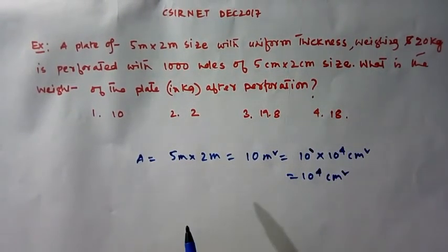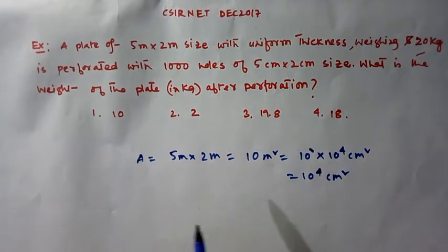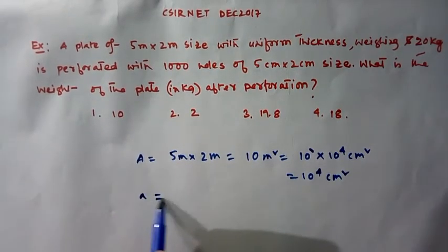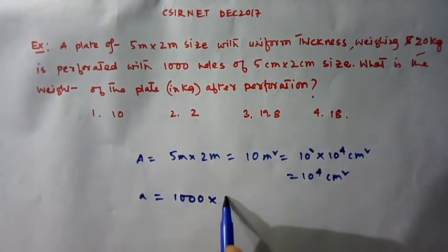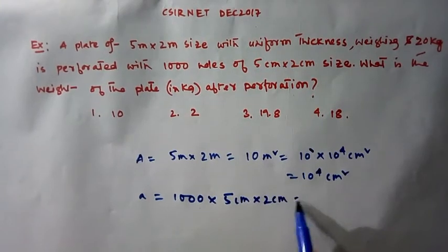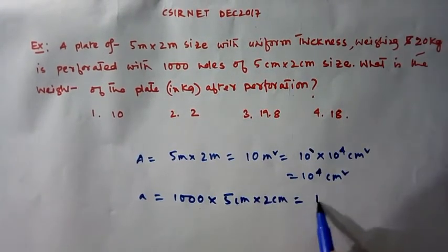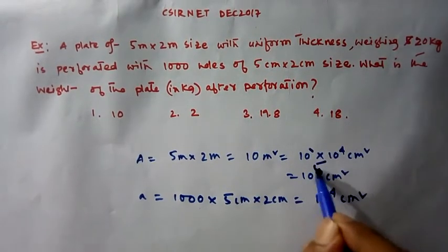There are 1000 holes that are made. Therefore, the area of 1000 holes is 5cm x 2cm, which equals 10 to the power of 4cm². Sorry, it will be 10 to the power of 4cm².